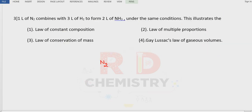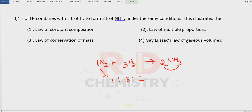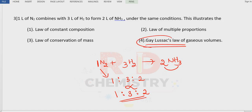Question 3: One liter of nitrogen reacts with three liters of hydrogen to give two liters of ammonia. Balancing the equation: N2 + 3H2 → 2NH3. The ratio of moles is 1 to 3 to 2, and proportionately the volumes are also 1 liter to 3 liters to 2 liters. Since the substances are gases and volumes are mentioned, the applicable law is Gay-Lussac's Law of Combining Volumes.